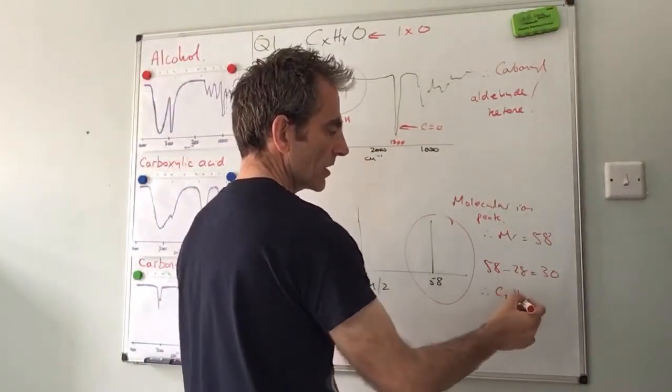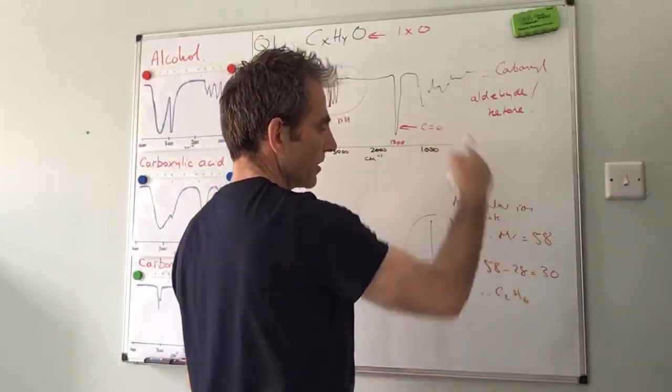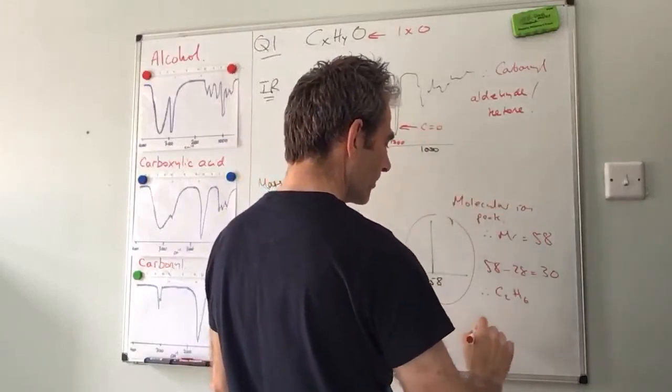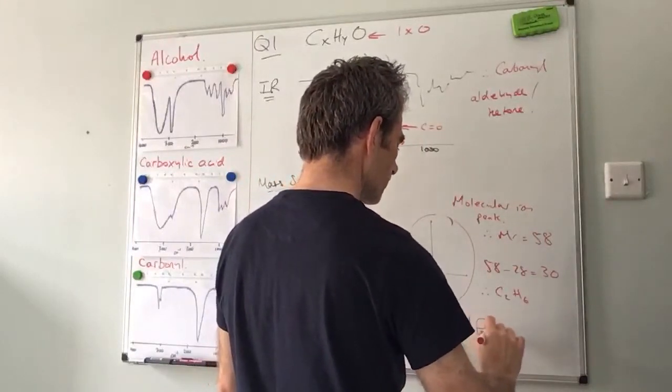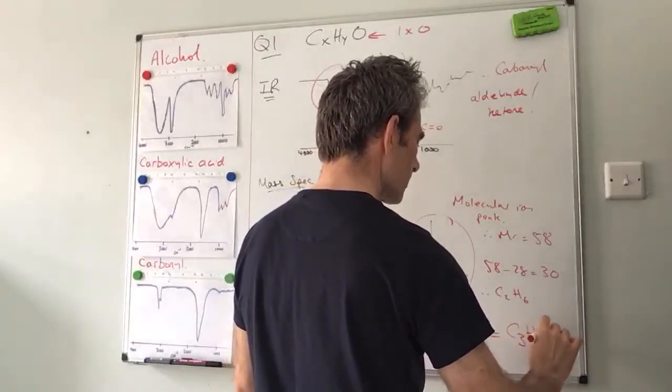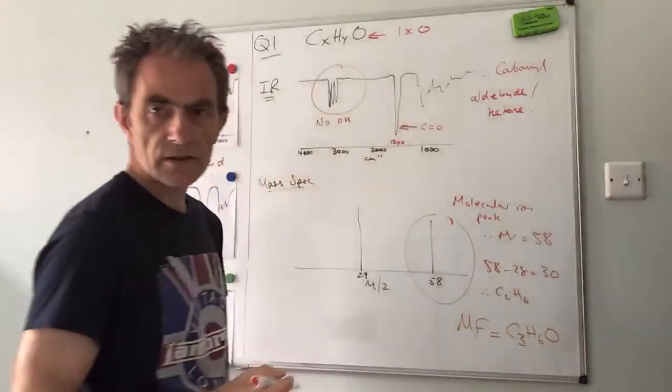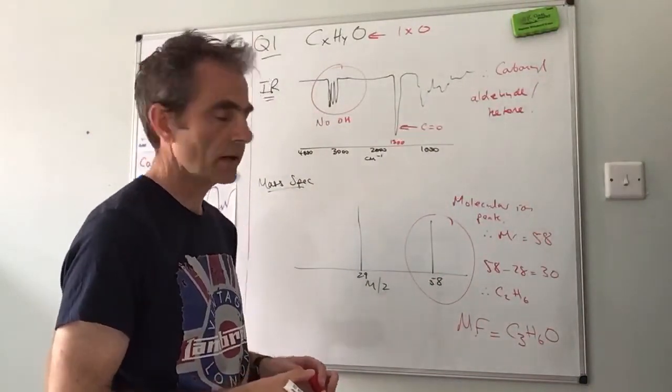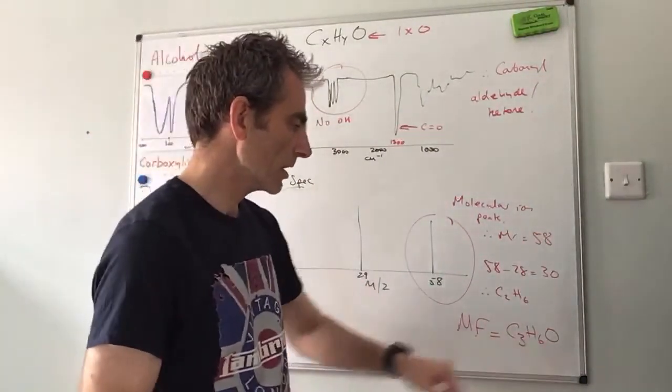So now let's just add this together, we've got C2H6 and CO, therefore the molecular formula is C3H6O, because the question did specify it wanted to know the molecular formula.